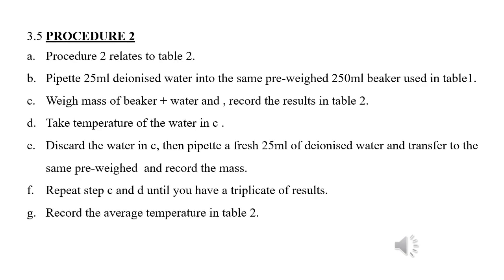Procedure 2 relates to Table 2. Pipette 25 milliliters of deionized water into the same pre-weighed 250 milliliter beaker used in Table 1. Weigh the mass of the beaker and water and record the results in Table 2. Take the temperature of the water, then discard it and pipette a fresh 25 milliliters of deionized water. Repeat until you have a triplicate of results, and record the average temperature in Table 2.